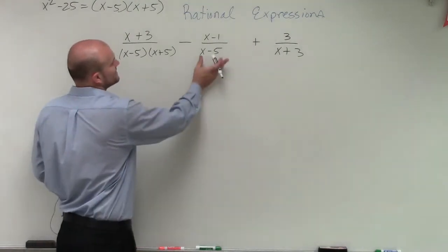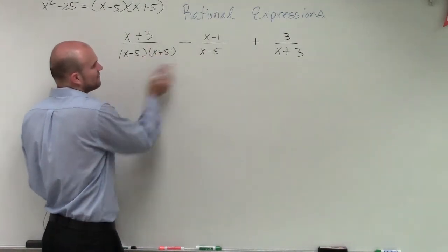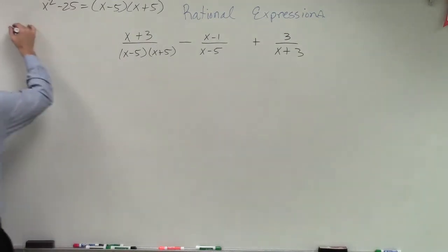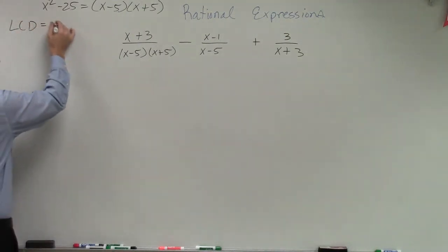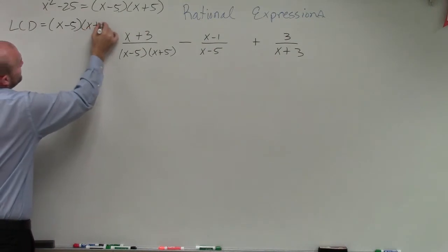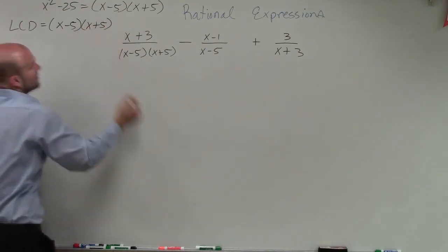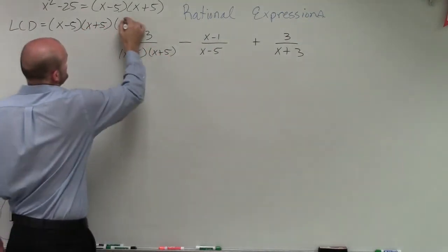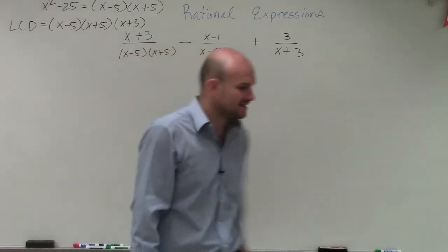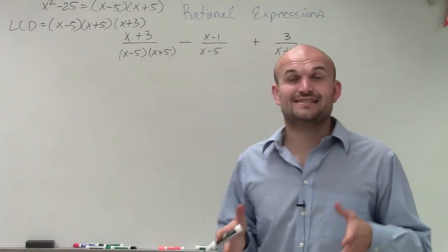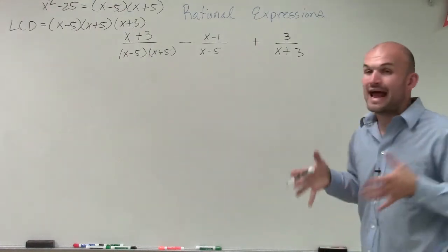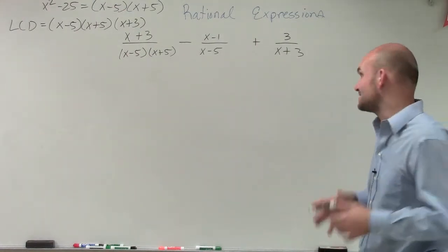So I can see that x minus 5 times x plus 5 — they already share an x minus 5 with the other denominator. So when determining my LCD, I can say my LCD is just going to be x minus 5 times x plus 5 times x plus 3. That's going to be my least common denominator.